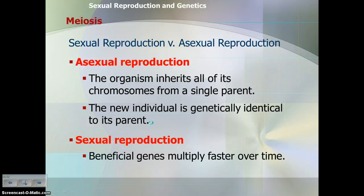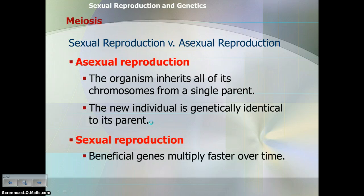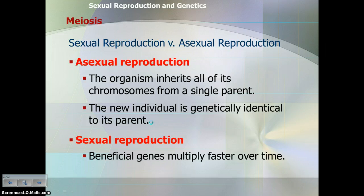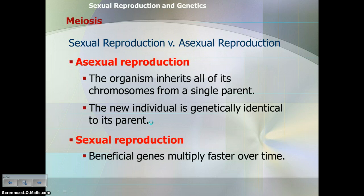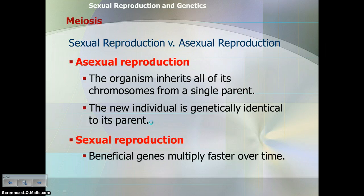Asexual reproduction involves one parent producing offspring that are genetically identical — this is mitosis, a form of asexual reproduction. Sexual reproduction is why meiosis is necessary. Why do we want genetic variation from sexual reproduction? Beneficial genes can multiply faster over time. For example, if an entire crop of plants is asexually reproduced and susceptible to a pest, the entire crop gets wiped out. But if that plant reproduces sexually, some will naturally be resistant, so not all of the crop will die when the pest is introduced.